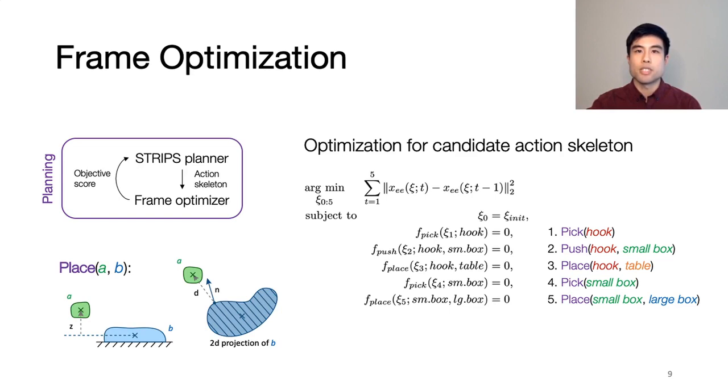To give a sense of what these constraint functions look like, the place action requires that the obstacle we're placing is above and touching the surface we're placing it on, and also that the object's center of mass is above the support area of the surface. We solve this problem using an off-the-shelf nonlinear optimizer, and then return the objective score back to the STRIPS planner, so we can find the action skeleton with the optimal score. In this case, optimal means the end effector travels the least distance.